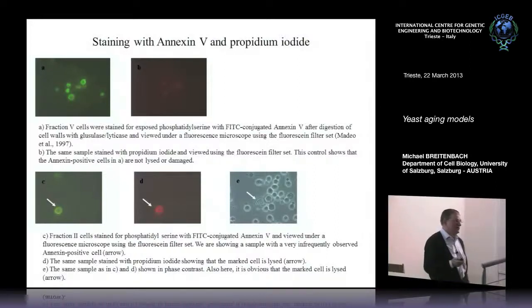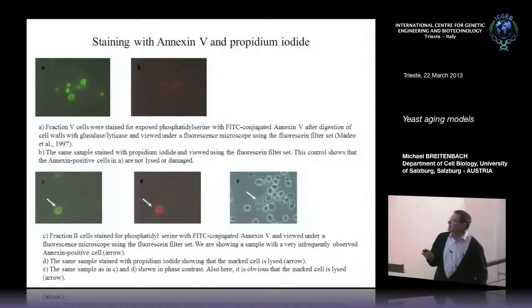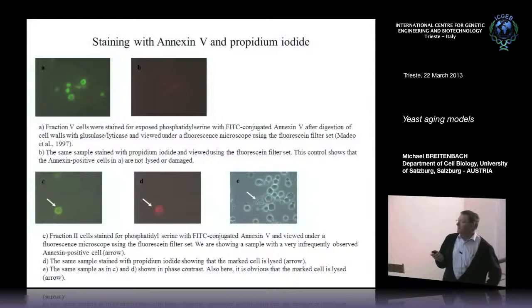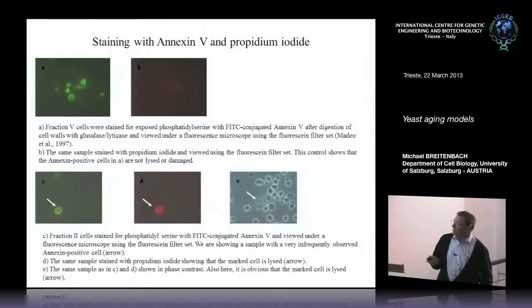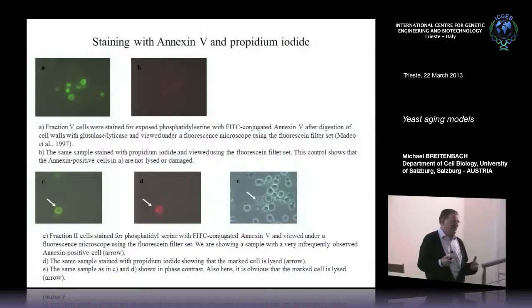An early marker of apoptosis is the inversion of the plasma membrane, which can be recognized by annexin-5. In an old cell preparation, these cells have started apoptosis and are annexin-5 positive. As a control we also check for holes in the plasma membrane, which would allow another stain to enter the cell — and this doesn't occur in apoptotic cells, confirming true apoptosis rather than necrosis. In young cells we don't see annexin-5 positivity. In short, old cells are annexin-positive and young cells are not.